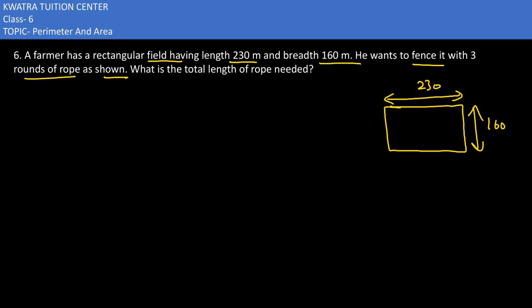And they are saying he wants to fence it with three rounds of rope. How many rounds will he take? Three. So if we want to make one round, we can easily find the perimeter of the rectangle. The formula is 2 into l plus b. Now here we substitute l value which is 230, b value 160.